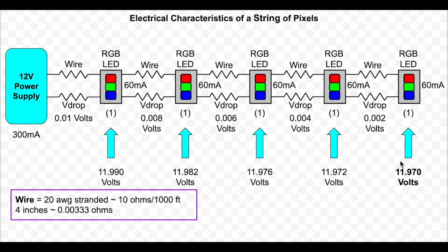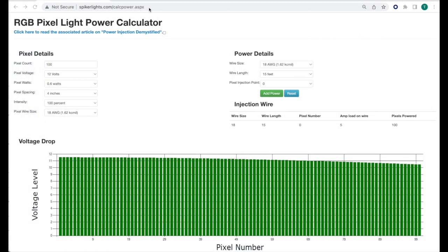The voltage drop in this example with just five pixels is negligible. However, if you increase the number of pixels to 100 or 200 or 300, then it's a completely different story. Let's take a look at a very handy online tool. I'm going to use the spikerlights.com RGB pixel light power calculator.